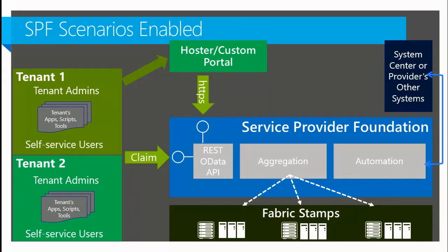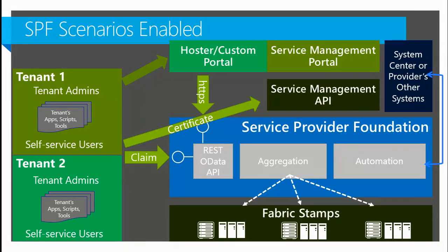Another way a client experience can talk to SPF is by issuing a claim. I call this the App Controller scenario — that's how we set up App Controller to talk to SPF. If you're using App Controller, one way to continue evolving that asset is by letting it talk to SPF and pick up the new features we're exposing. So today there are two paths to talk to SPF: basic authentication over HTTPS, or claims-based — presenting a SAML token and making a claim against SPF. There's a third way involving the Azure Services Management Portal and API.